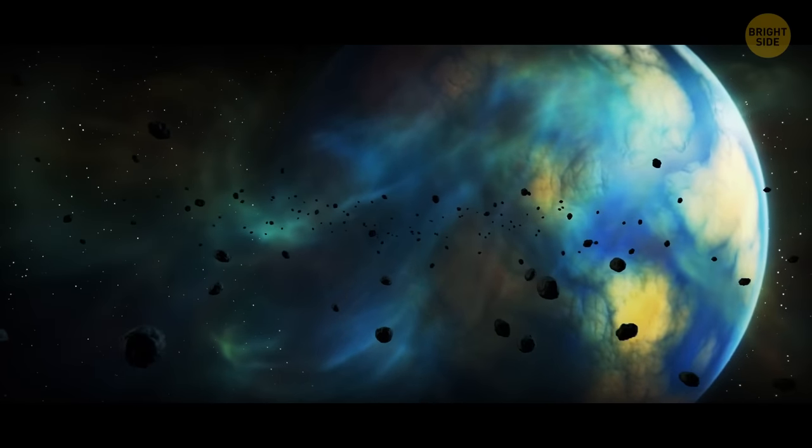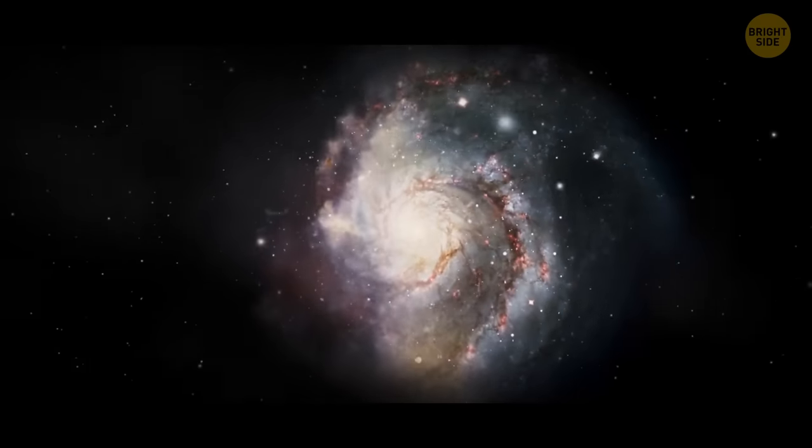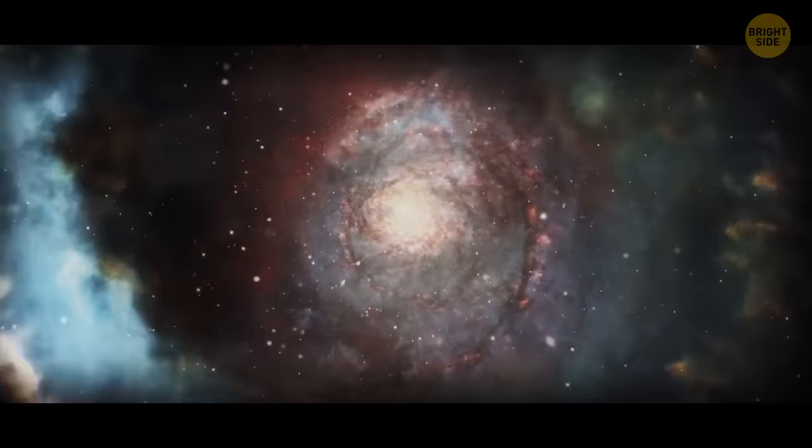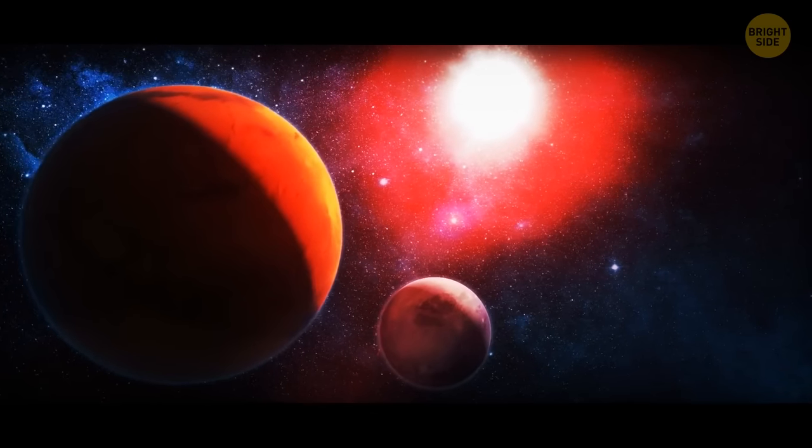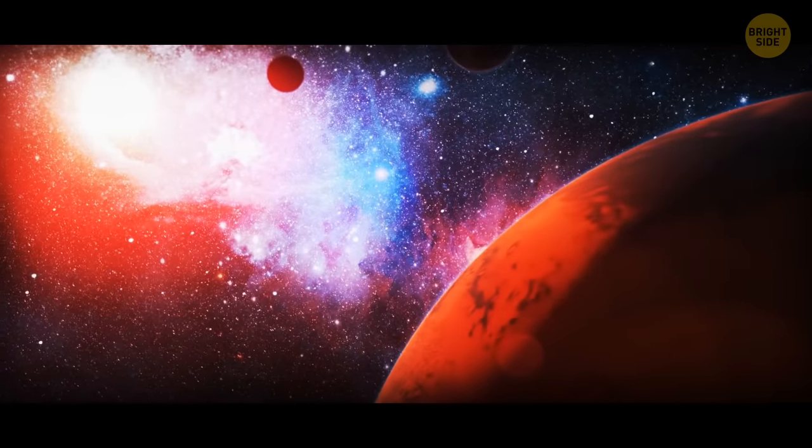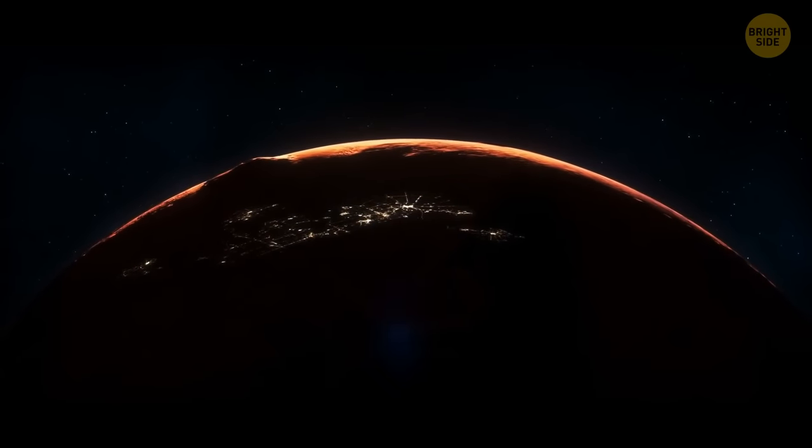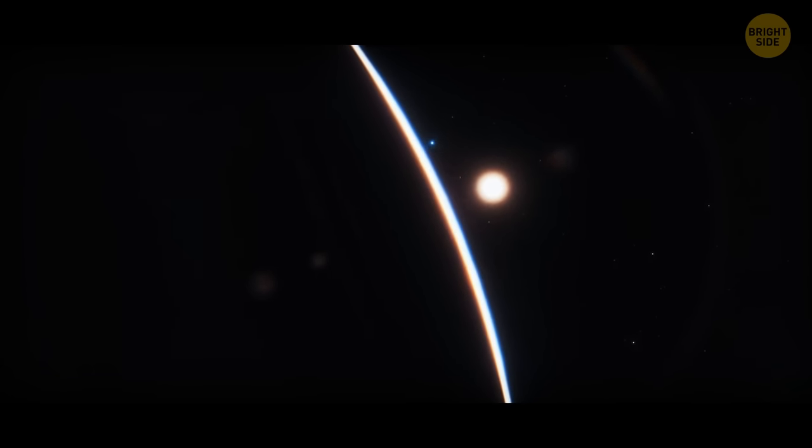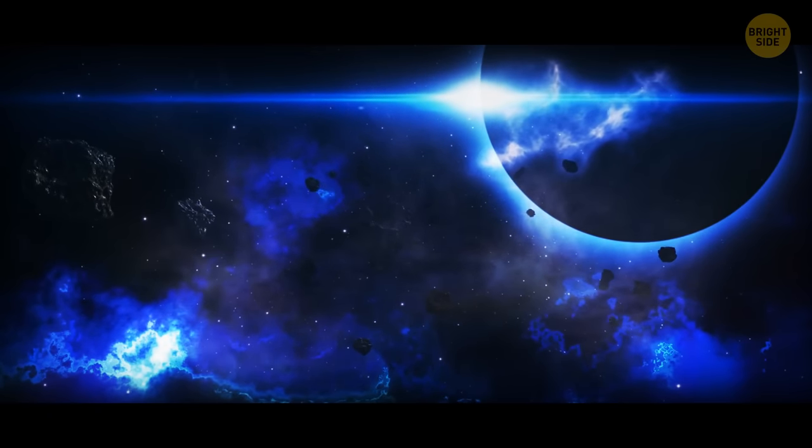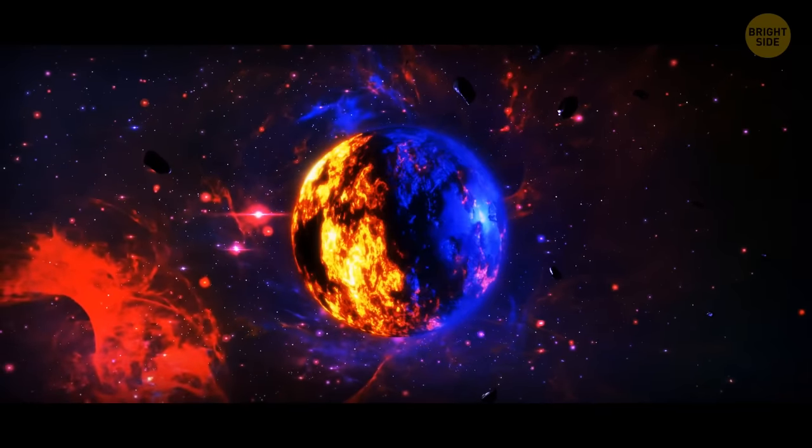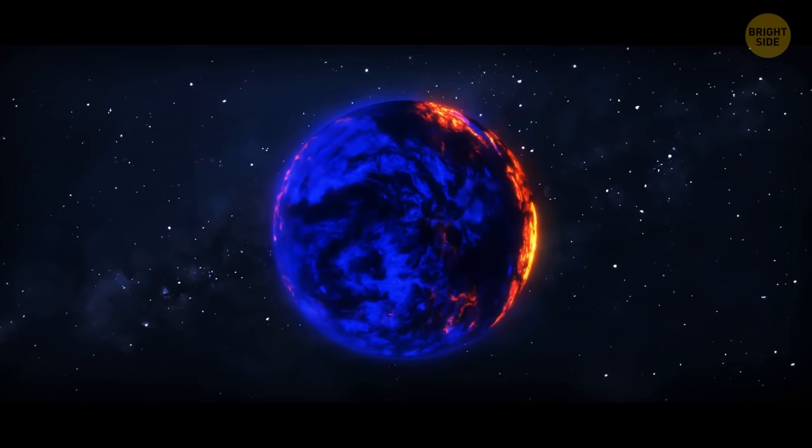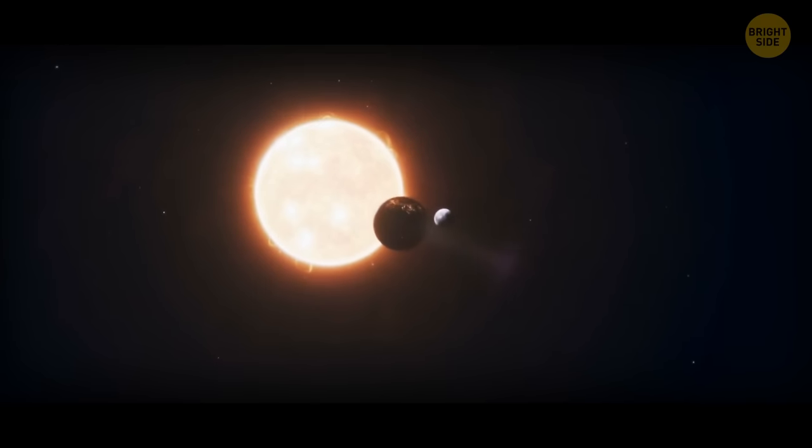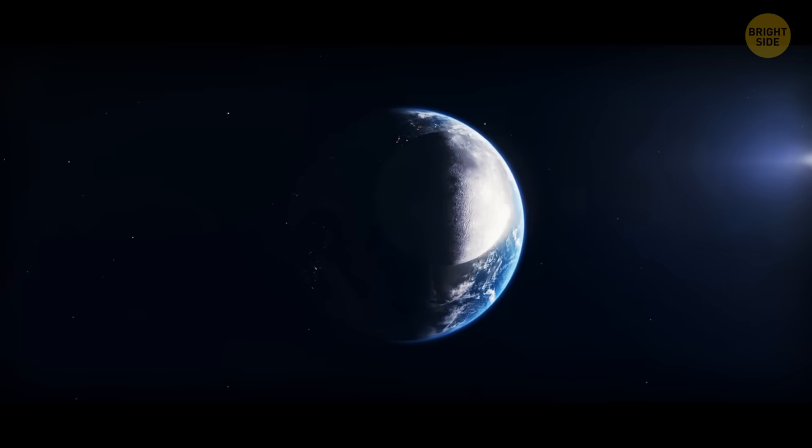All this is somewhat similar to tidally locked planets. Imagine going on a date with a planet, but instead of being charming and mysterious like you'd hoped, it's just staring at you with the same face all night long. That's basically what it's like to hang out with a tidally locked planet. Tidally locked planets are planets that rotate around their axis at the same rate that they orbit their star. This means that the same side of the planet always faces the star, while the other side is in permanent darkness. Being tidally locked can have some weird effects on the planet's climate and weather. The side facing the star can become extremely hot, while the other side can be incredibly cold. The atmosphere on the planet can also get pretty wild, with strong winds blowing from the hot side to the cold side. And it doesn't have to be planets only. Our moon also works this way. Did you know that we always see only one side of the moon? That's because it's tidally locked to the Earth.